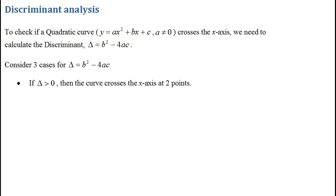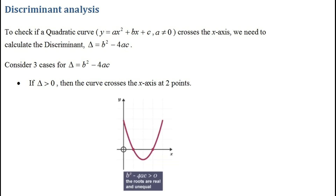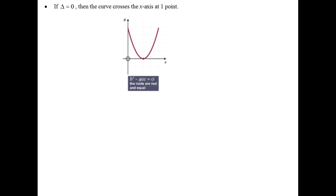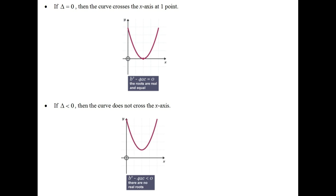Now consider three cases for delta. The first case: if delta is greater than zero, your quadratic curve crosses the x-axis at two points — as you can see in the diagram here. The second case: if delta is equal to zero, then the quadratic curve crosses the x-axis at one point, giving a repeated root. The third and final case: if delta is less than zero, the curve does not cross the x-axis at all.